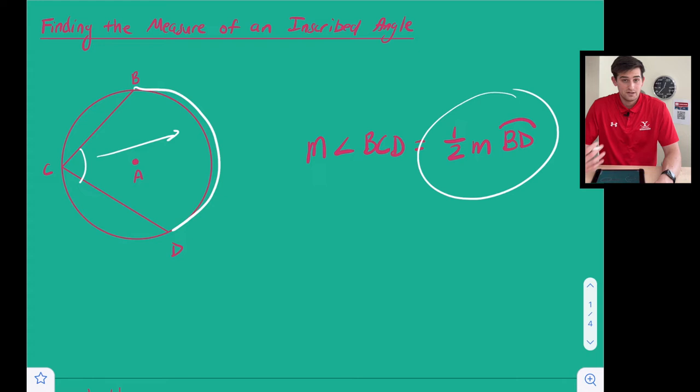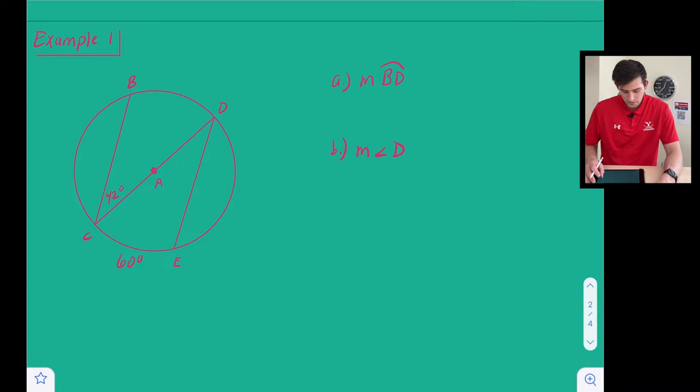And how does it relate? Well the angle measure BCD is one half of the measure of the arc. All right so let's look at some examples where we use that information.